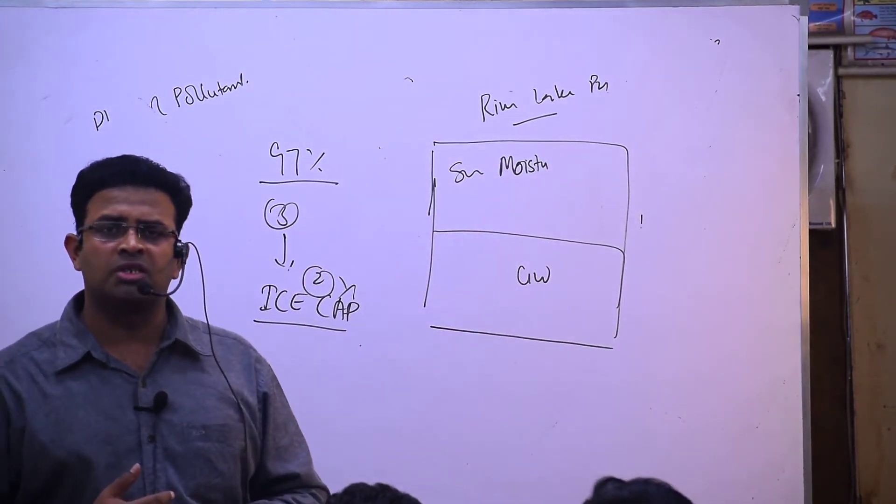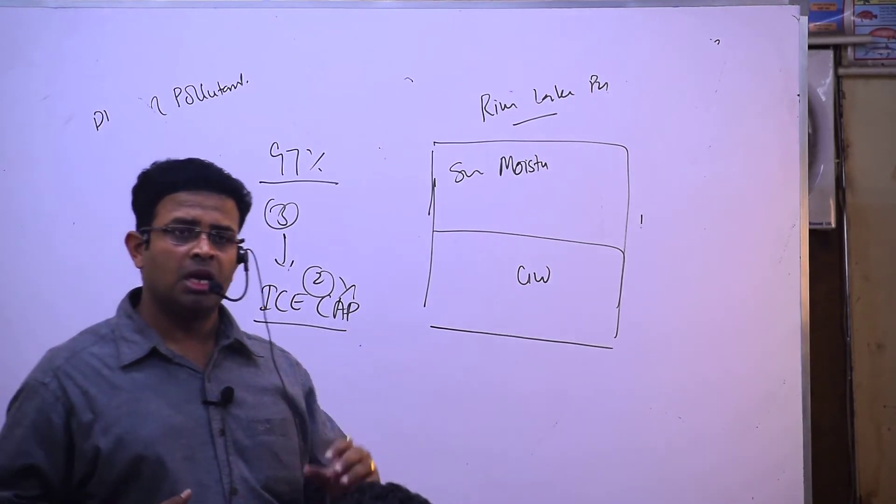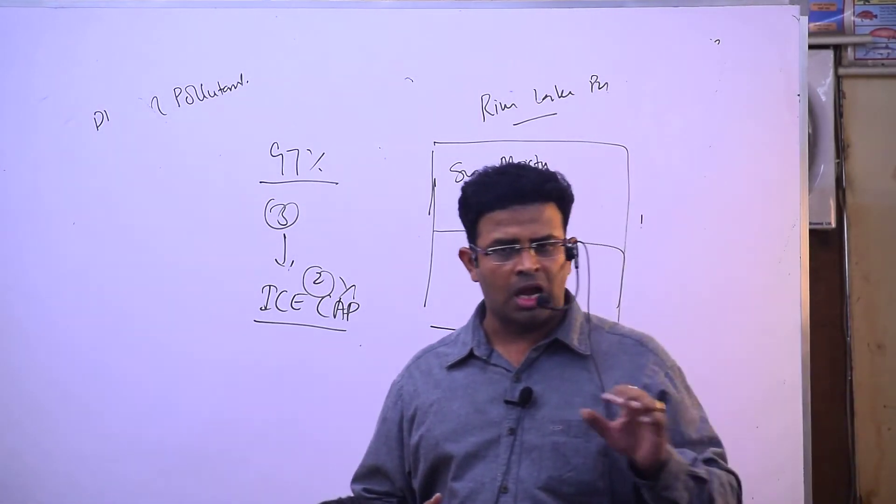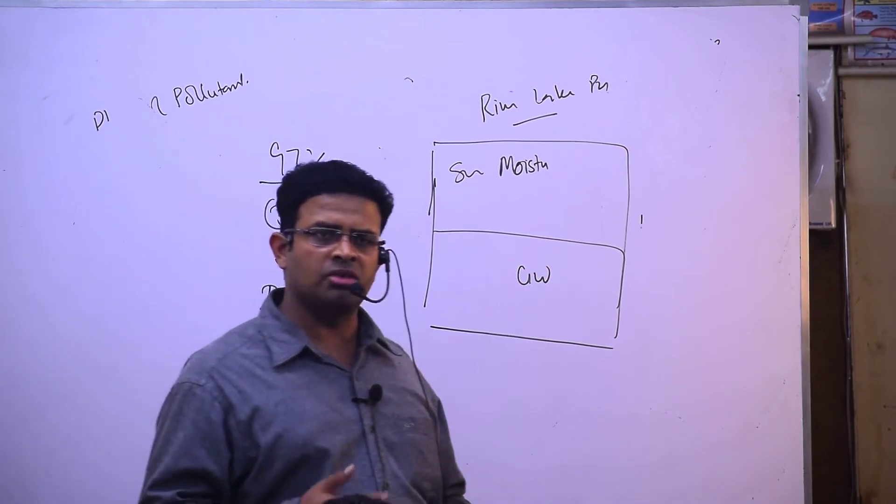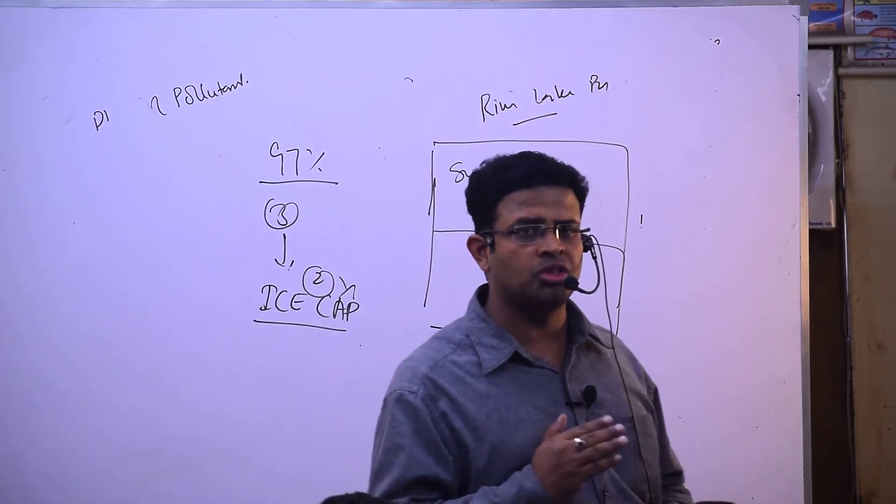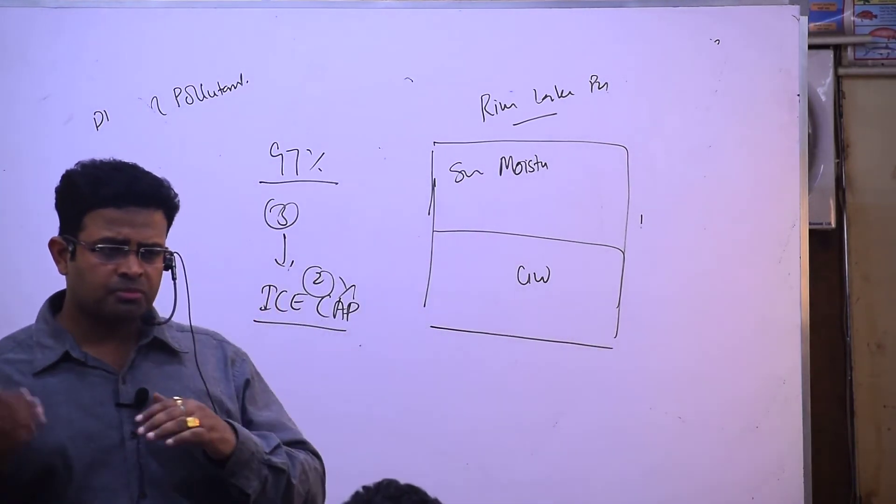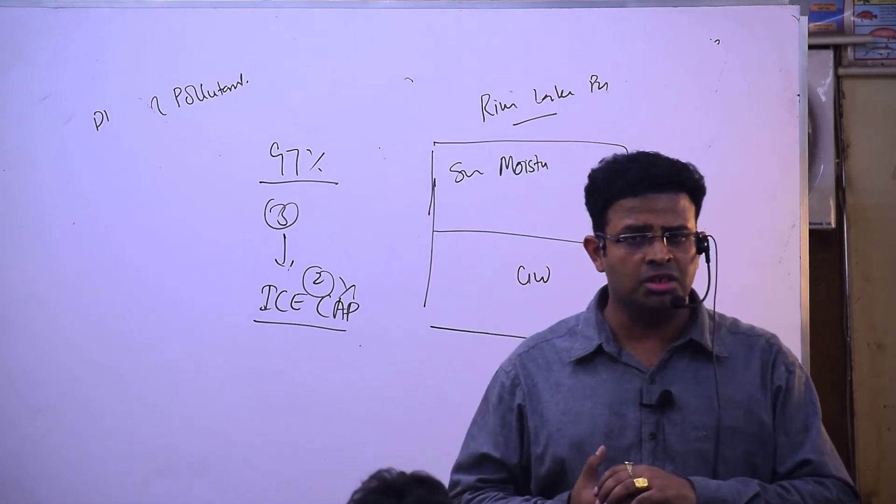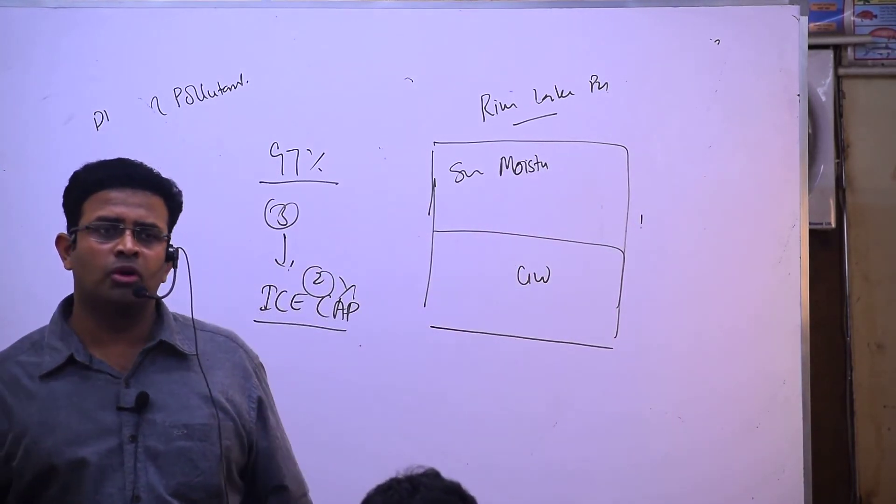Ecological succession means ecosystem development. Primary succession occurs in bad quality conditions first, then secondary succession. Secondary succession includes autogenic and allogenic types. Then we discussed ecotone - zone of tension - and edge effect.